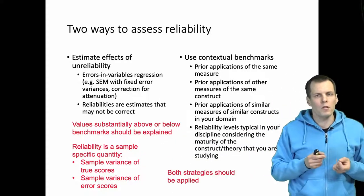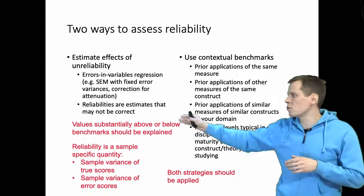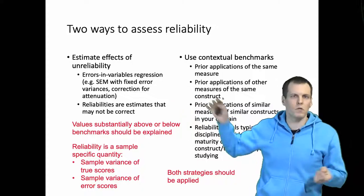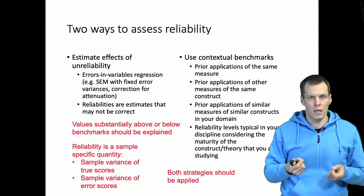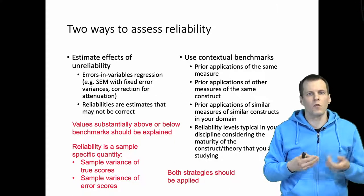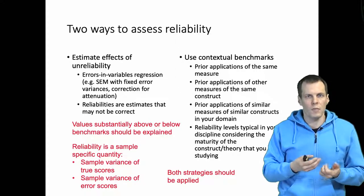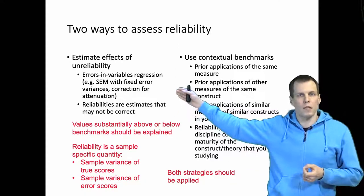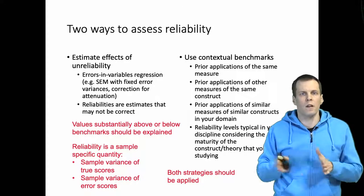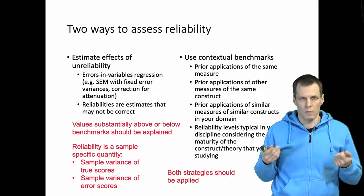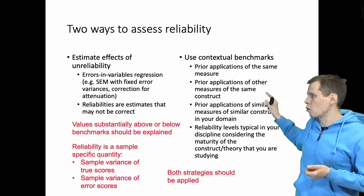My recommendation is that you should always apply both of these strategies. So even if you don't use an errors-in-variables regression or structural equation model as your main analysis technique, it's a useful way of doing a robustness check or a what-if analysis. What would the results be if reliability was corrected? And if the results are very different from your original results, then you have some explaining to do in your study. And also, comparing against best practice is always a good idea.